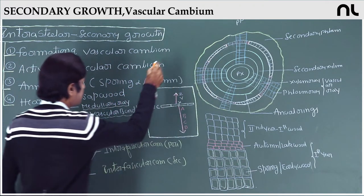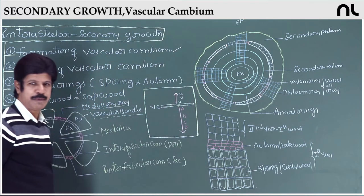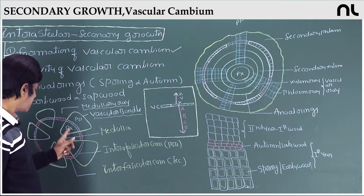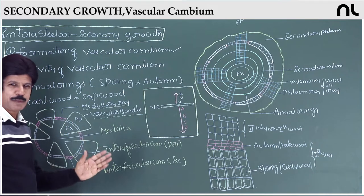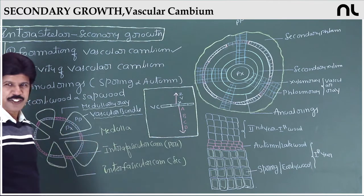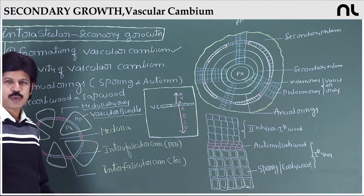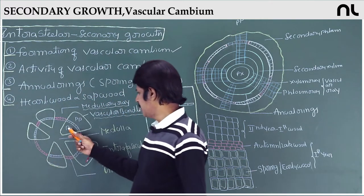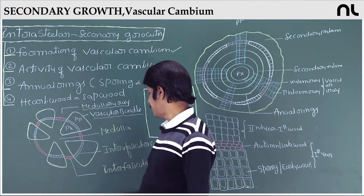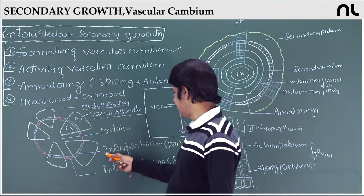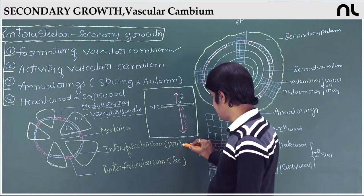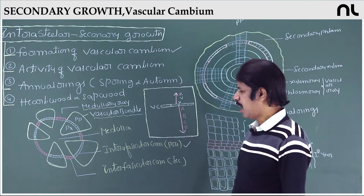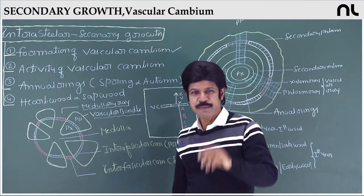For the formation of vascular cambium in the case of a dicot stem, the xylem and phloem are on the same radius, so the bundle is collateral and conjoint. There is a cambium present in between the primary xylem and primary phloem, which is called intrafascicular cambium — it is primary, also called fascicular vascular cambium.